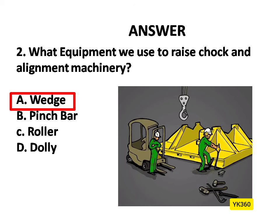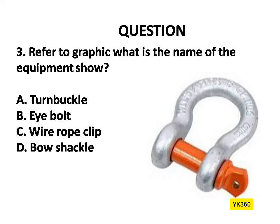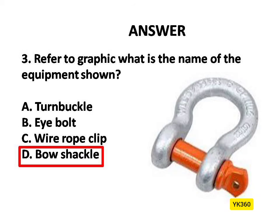Question Number 3. Refer to graphic — what is the name of the equipment shown? Options are: A. Turnbuckle, B. I-Bolt, C. Wire Rope Clip, D. Bow Shackle. Answer is Option D: Bow Shackle.